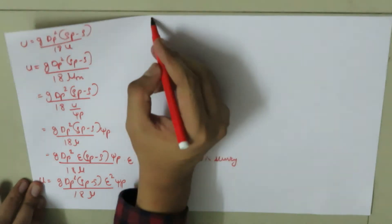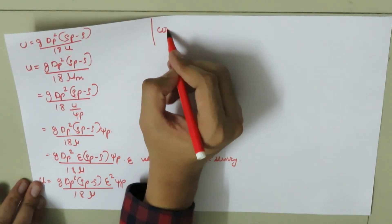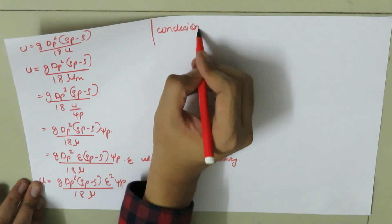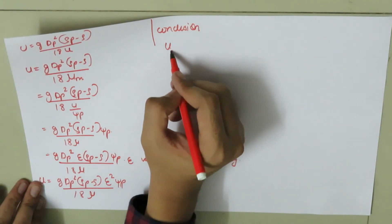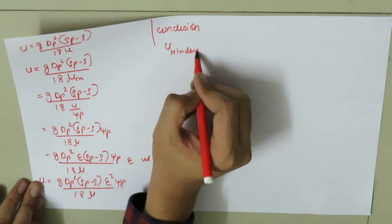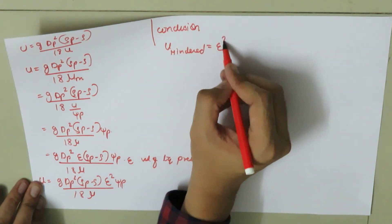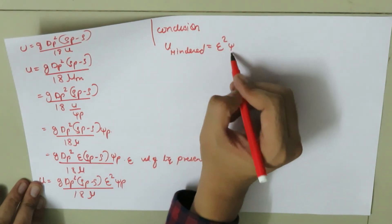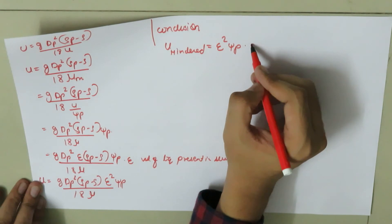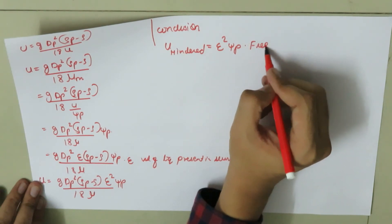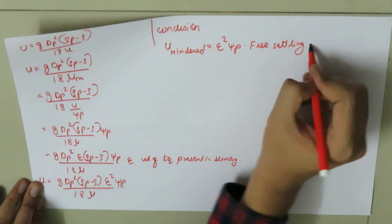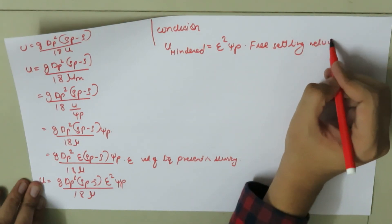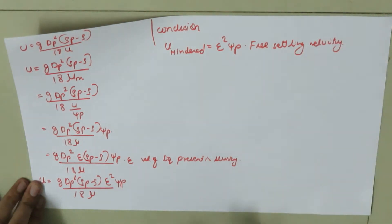To get the relative velocity, we multiply by epsilon, which is the volume fraction of liquid present in the slurry. Our final equation is: u = g dp² (rho_p minus rho) epsilon² psi_P / 18 mu. The hindered settling velocity equals epsilon² psi_P times the free settling velocity.